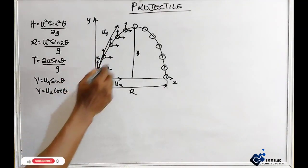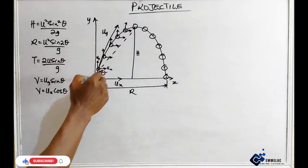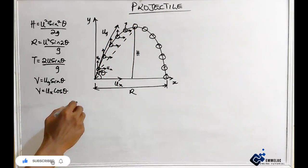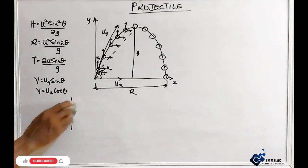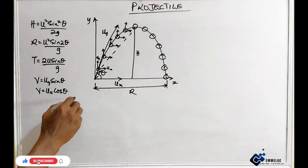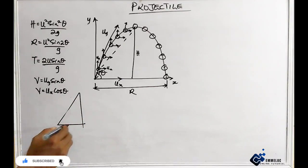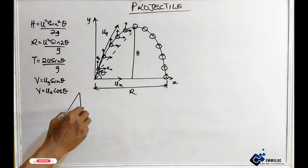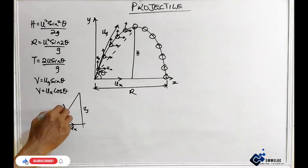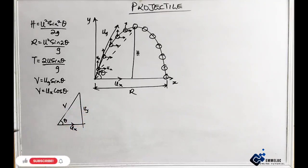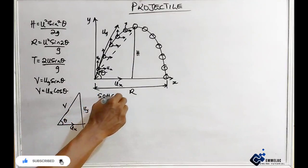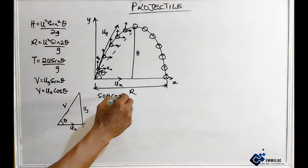Now let us bring this to a clearer picture. Taking a close look at this diagram here, this is the horizontal velocity, this is the vertical velocity, and this is the resultant velocity between the two. Now let us resolve this with respect to the vertical velocity and the resultant velocity in relationship to the angle of projection. From the trigonometry rule — recalling from Pythagoras, sorry, trigonometry rule —